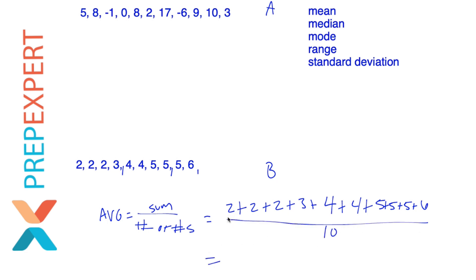So adding that up, we got six, nine, 17, 32, 38. So 38 divided by 10, which is of course 3.8. So the mean for our second data set is 3.8.